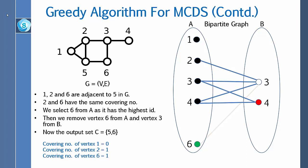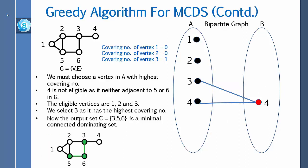Now the output set C = {5, 6}. The covering number of vertex 1 is 0, vertex 2 is 0, and vertex 3 is 1. We must choose a vertex in A with the highest covering number. Vertex 4 is not eligible as it is neither adjacent to 5 nor to 6 in G. So the eligible vertices are 1, 2, and 3. We select 3 as it has the highest covering number. Therefore, the output set C = {3, 5, 6} is the minimal connected dominating set.